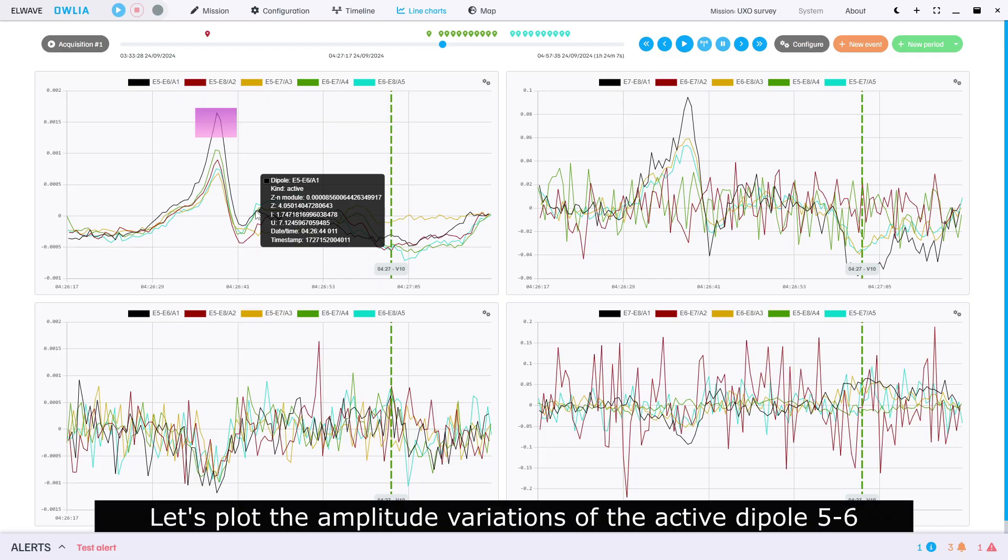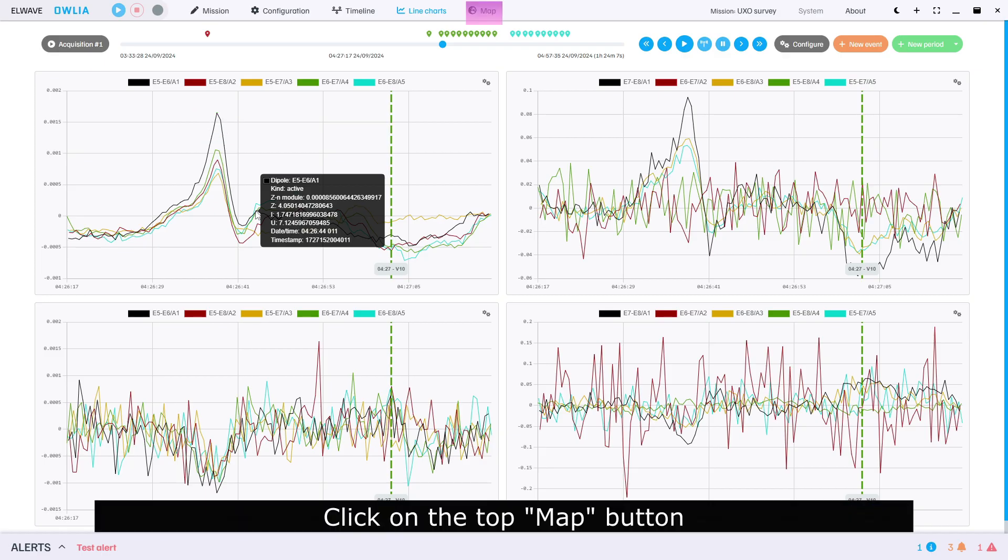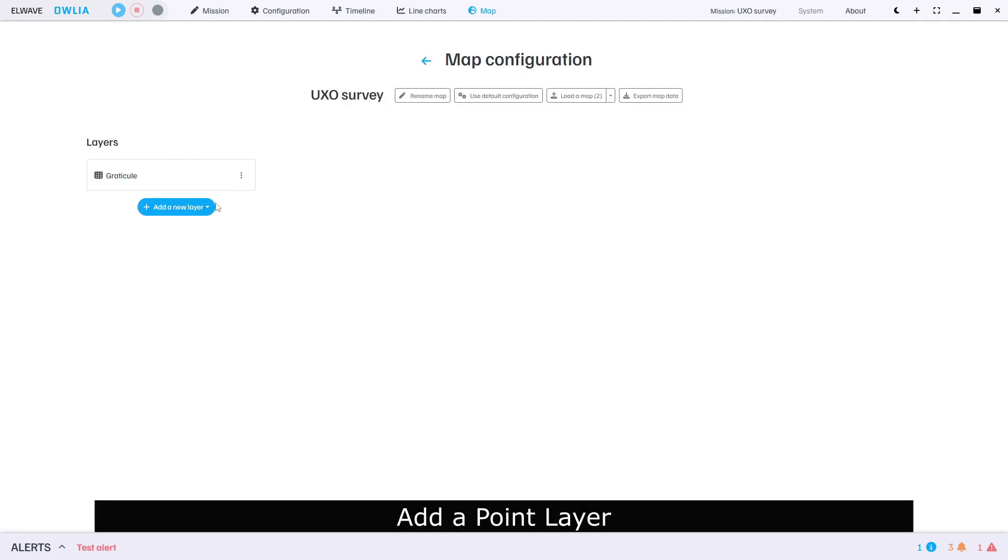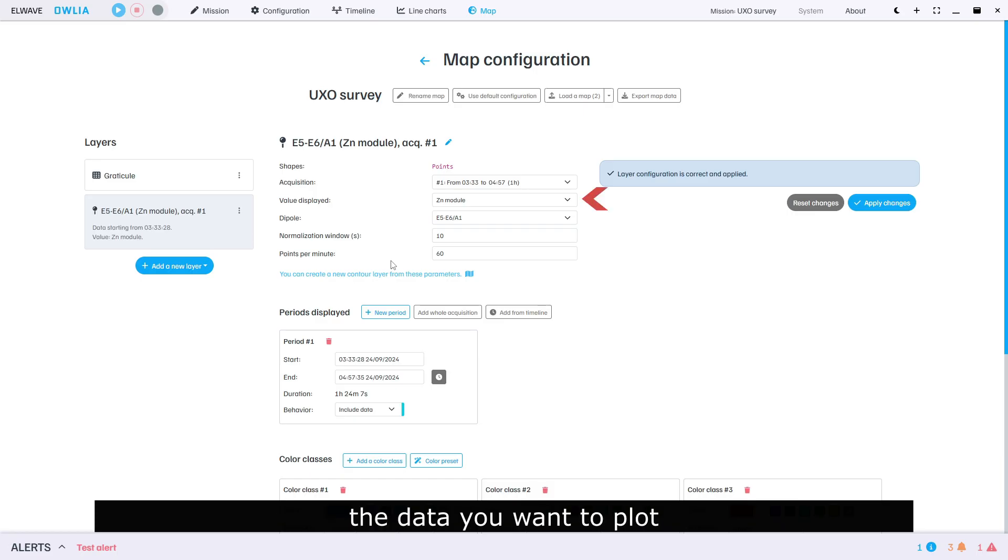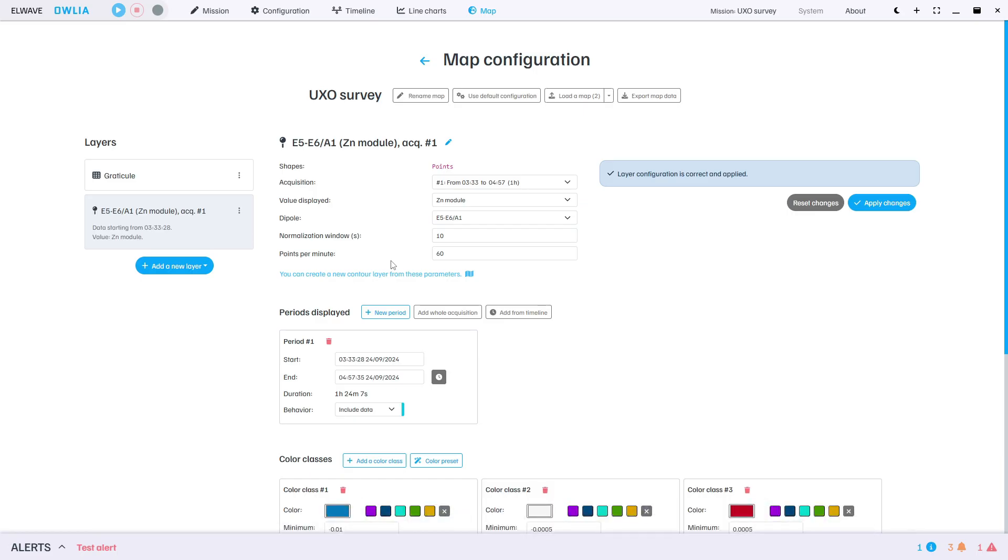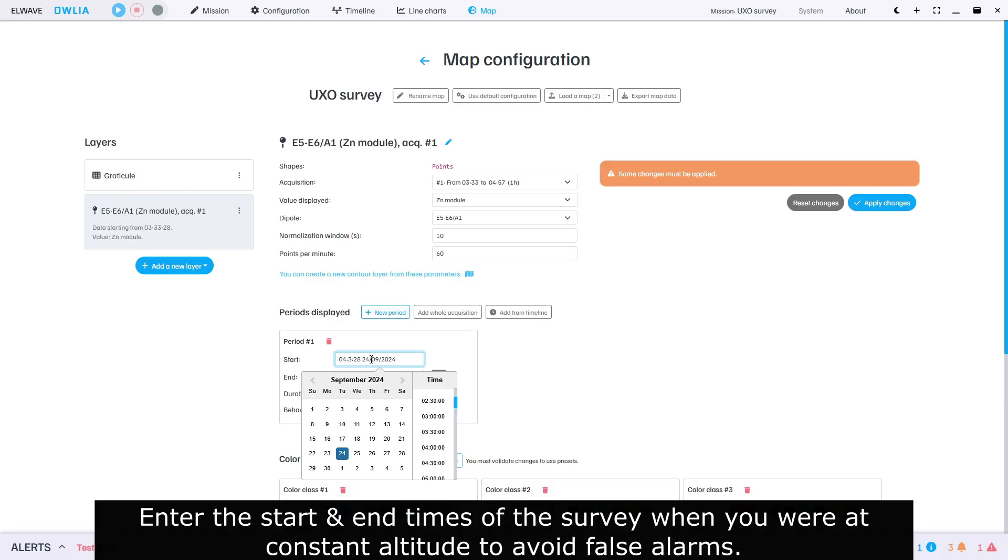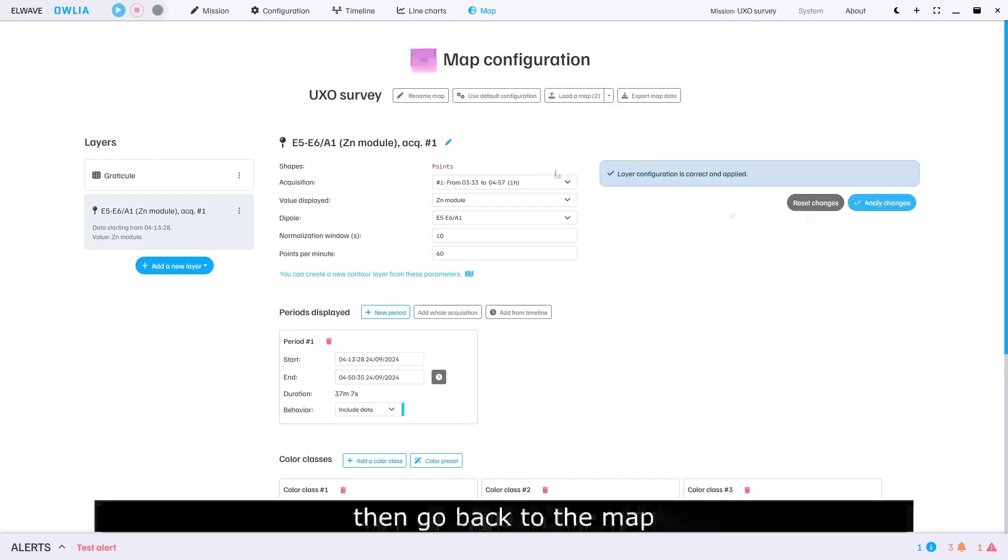Let's plot the amplitude variations of the active dipole 5 to 6. Click on the top map button. Click on configure at the top of the screen, add a point layer, and select your arrangement, dipole, the data you want to plot. Enter the start and end times of the survey when you were at constant altitude to avoid false alarms.